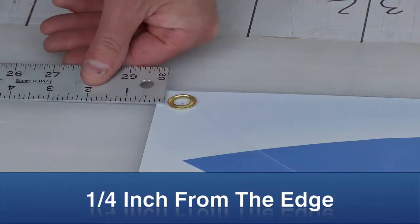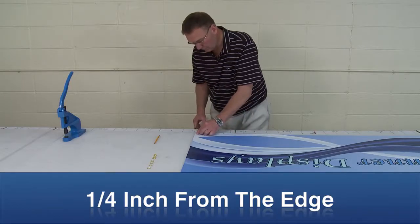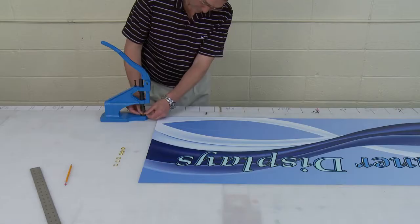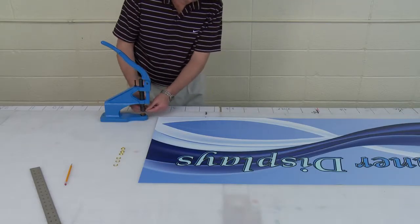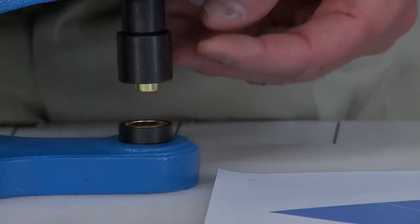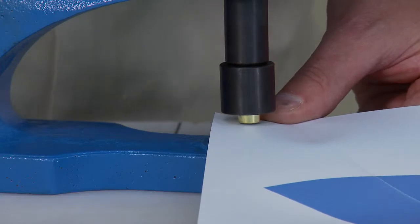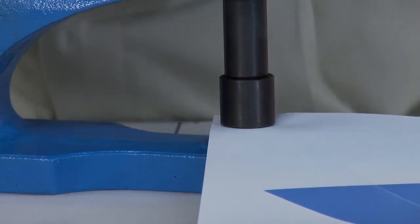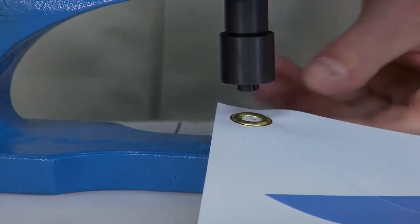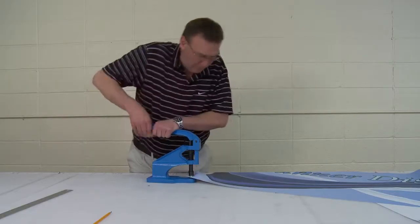Mark the position of the grommets on the printed side of the graphic. Using a grommet press, set your grommets through the graphic at the marked positions. Repeat the process and place the grommets at the remaining corners of your graphic.